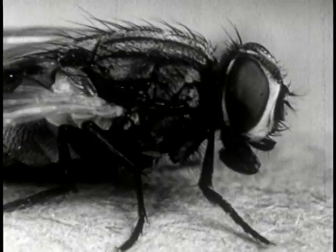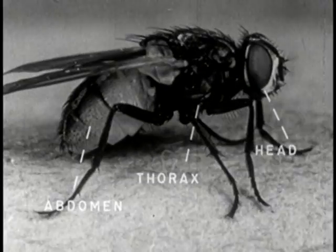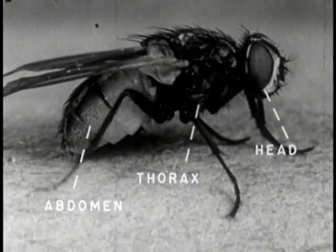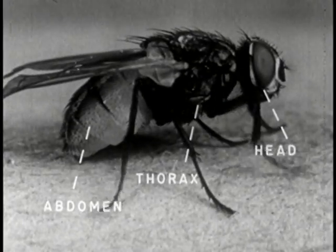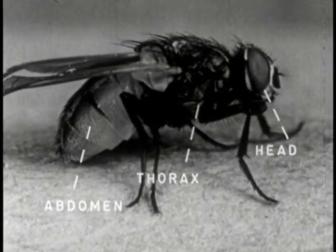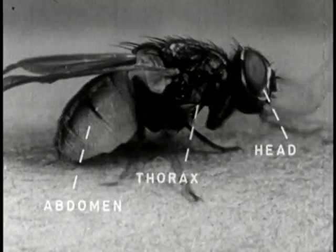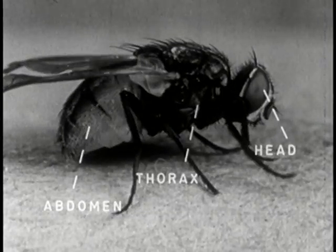Being a true insect, the housefly has three distinct body parts: a head, a thorax, and an abdomen. The head bears the eyes, antennae, and mouth parts or proboscis.